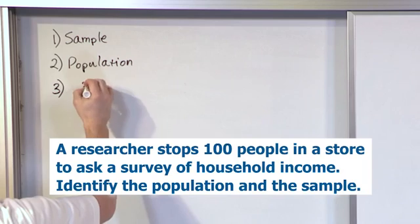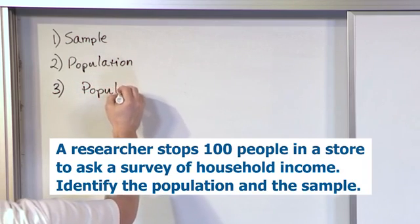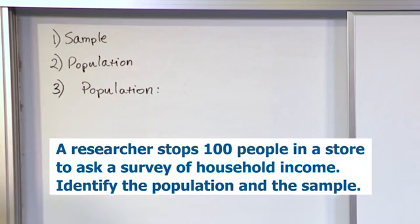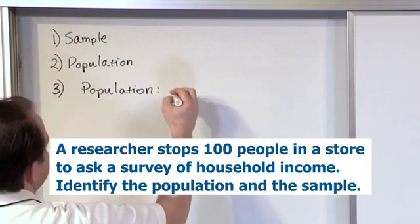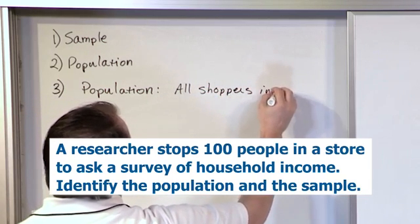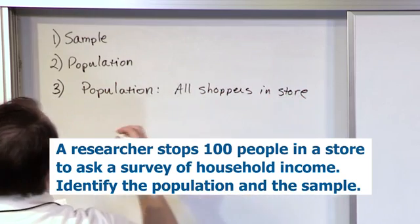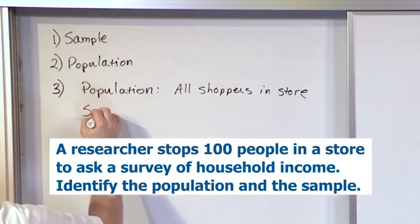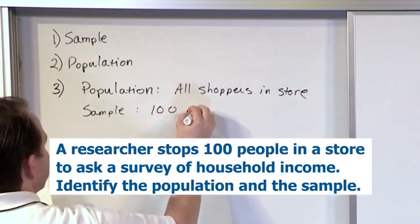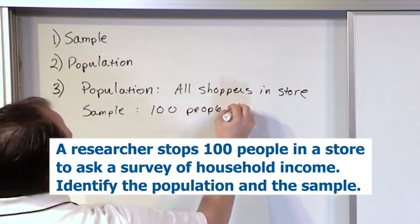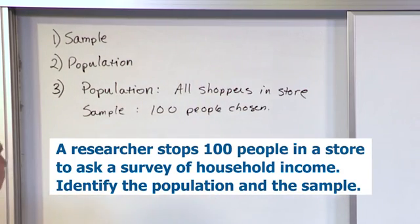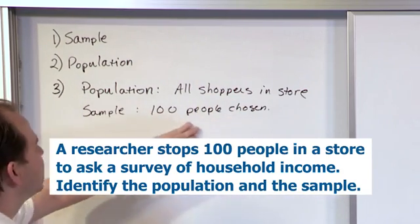Let's start with the population. This could be open to interpretation a little bit, but I would argue that the population here is all shoppers in the store. Right? And then I would also argue that the sample is 100 people chosen. There's a little bit of wiggle room in how you do this. I mean, the sample is rock solid.